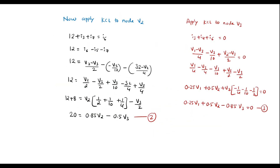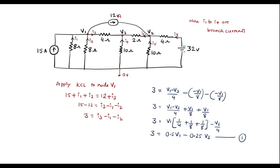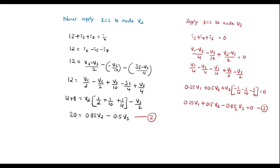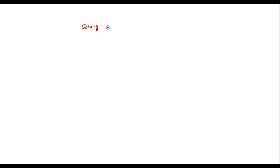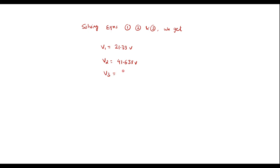We now solve equations 1, 2, and 3. Note that in Equation 1 the coefficient of V2 is 0, in Equation 2 the coefficient of V1 is 0, and Equation 3 has all three terms. Solving directly using a calculator gives: V1 = 21.39 volts, V2 = 41.638 volts, and V3 = 30.784 volts.